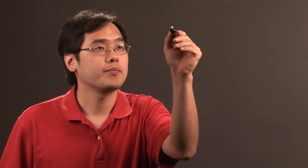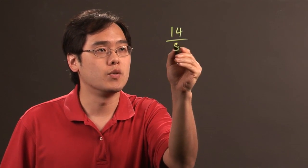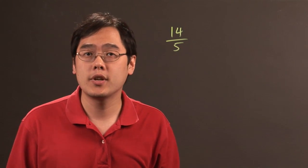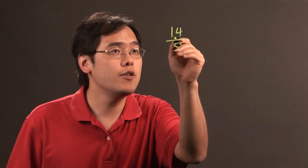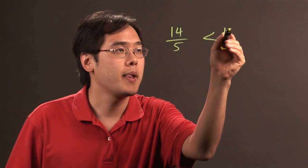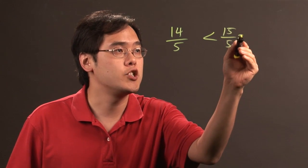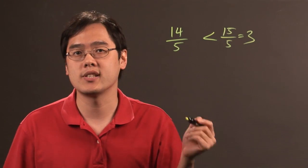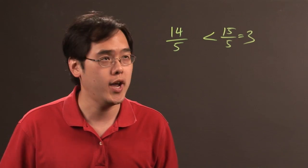For example, if you have 14 over 5, you know that it's not going to divide evenly. But 14 over 5 is going to be less than 15 over 5, which is 3. So you know that 14 over 5 is going to be a number slightly less than 3.